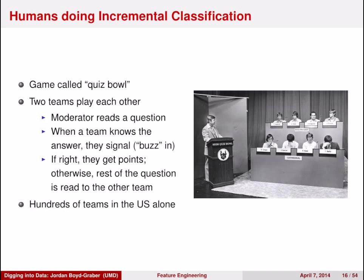So first I'm going to talk about data that comes from a setting called Quiz Bowl. Quiz Bowl is a trivia game where two teams play against each other. A moderator reads a question. When a team knows the answer, they signal. This is called buzzing. And if they get it right, they win points. Otherwise, the rest of the question goes to the other team. There are hundreds of teams doing this in the US alone every weekend.